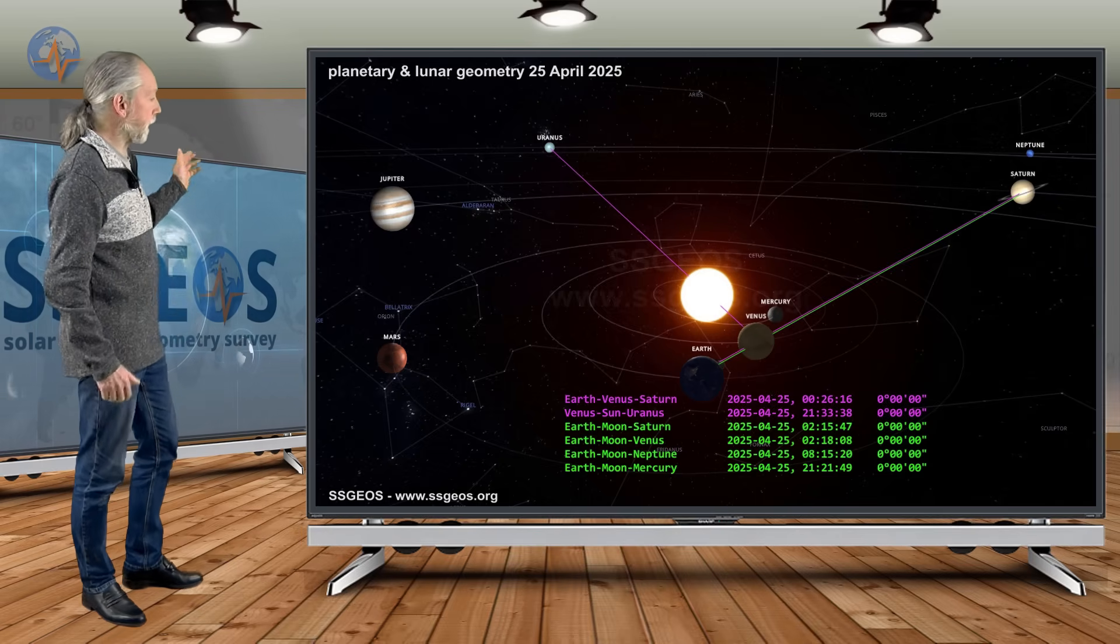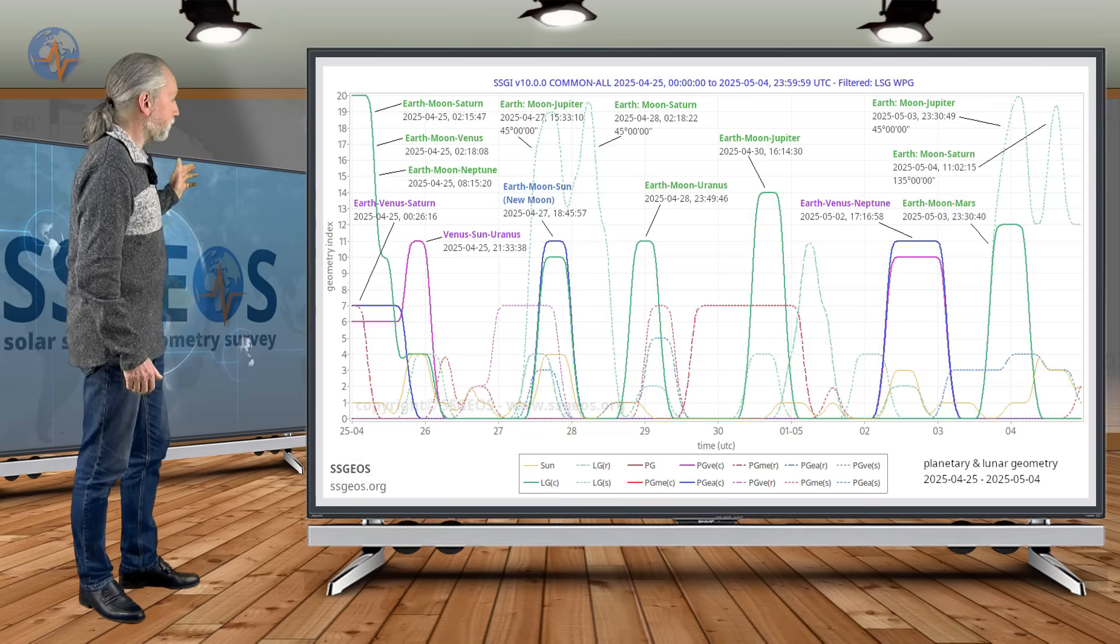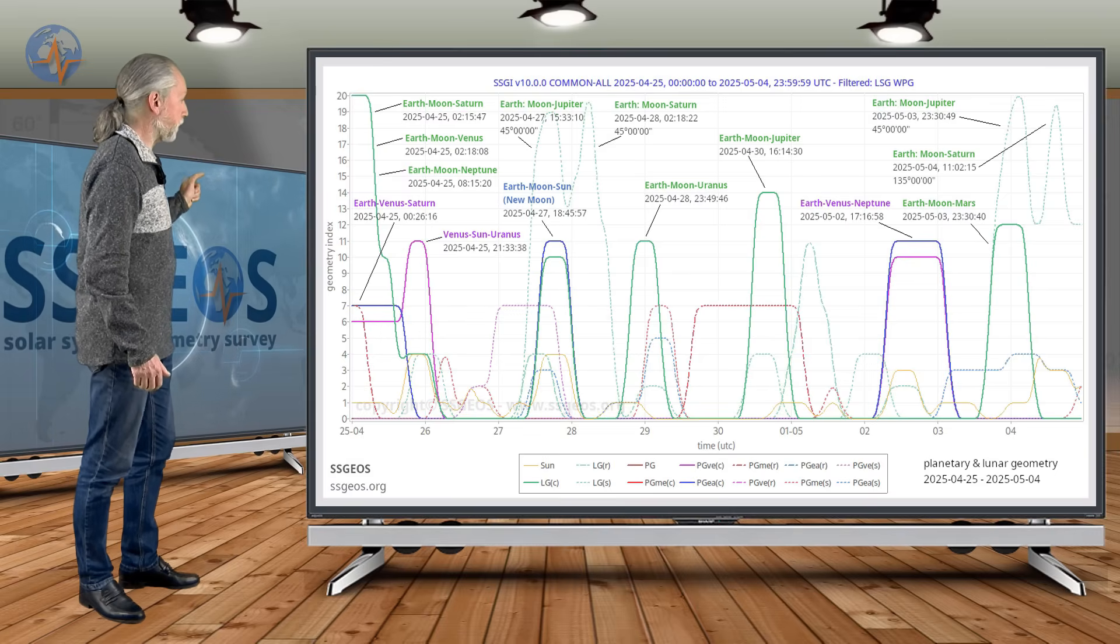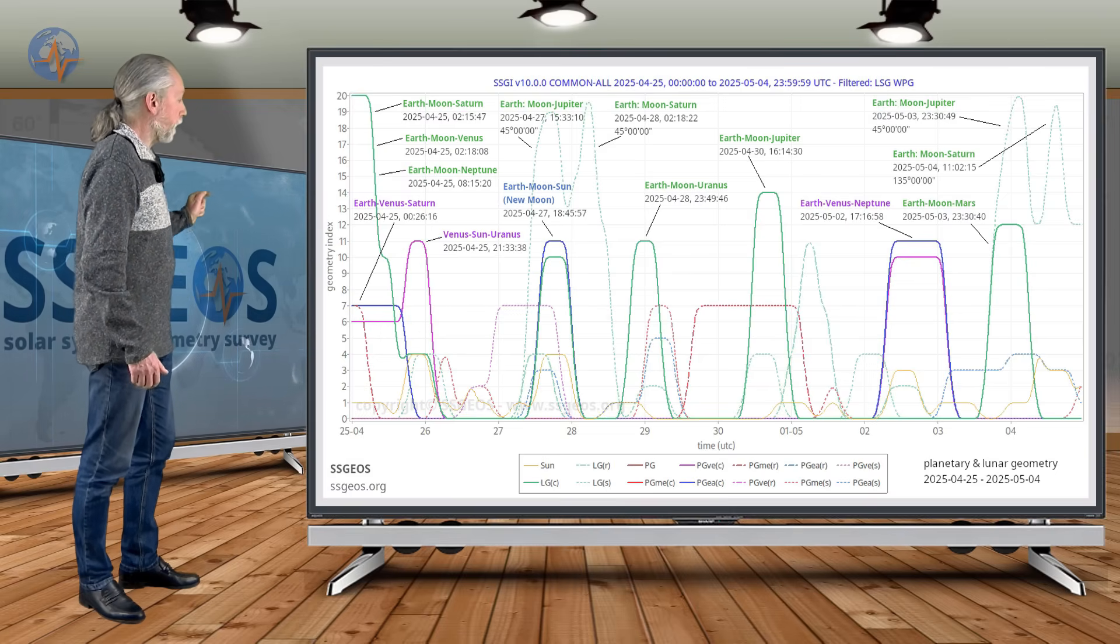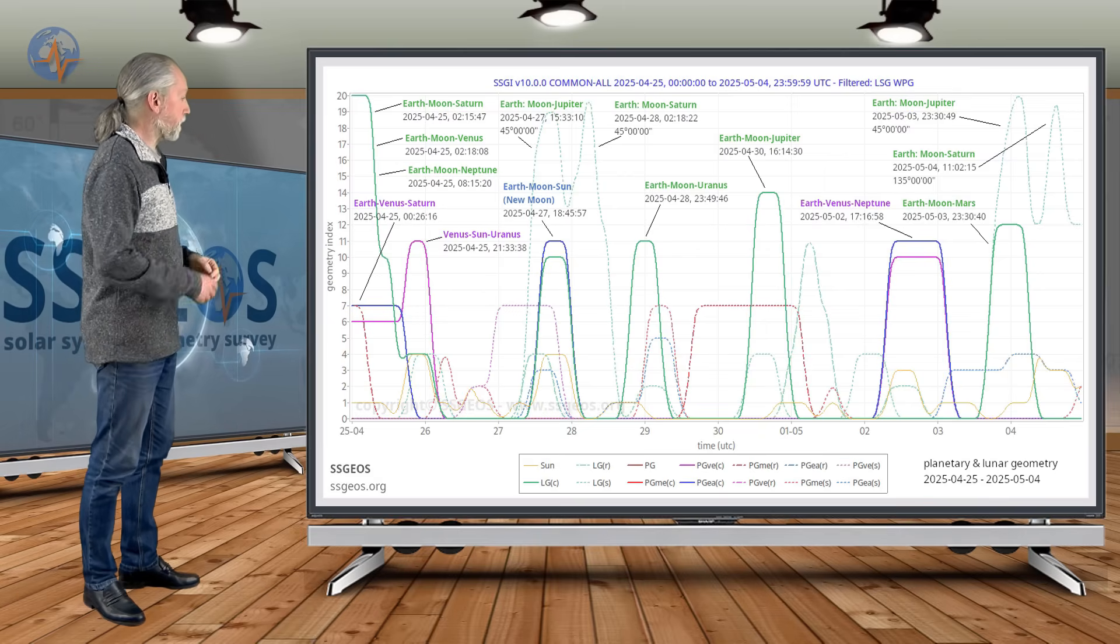So let's have a look at the SGI graph again. We see the convergence here on the 25th, and three lunar conjunctions, that's with Saturn, Venus, and Neptune, while Earth, Venus, and Saturn are in a conjunction, and that's followed by Venus, Sun, Uranus.